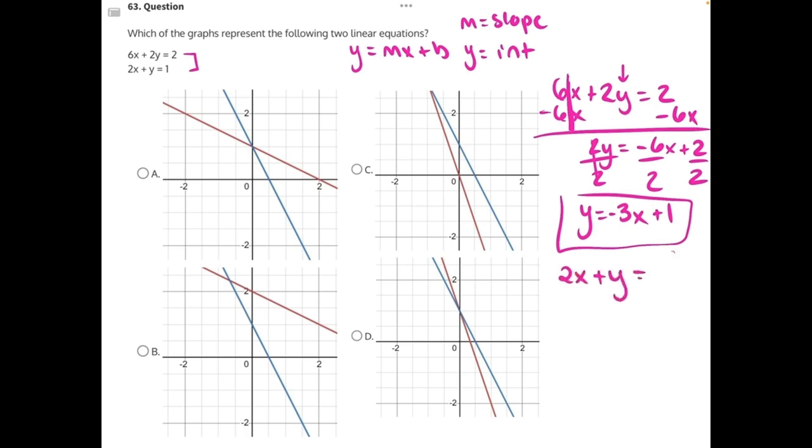2x plus y equals 1. Again, we want to isolate our y variable. So let's subtract 2x from both sides, do the opposite operation. That will cancel, leaving us with y equals negative 2x plus 1. And this is our second equation.